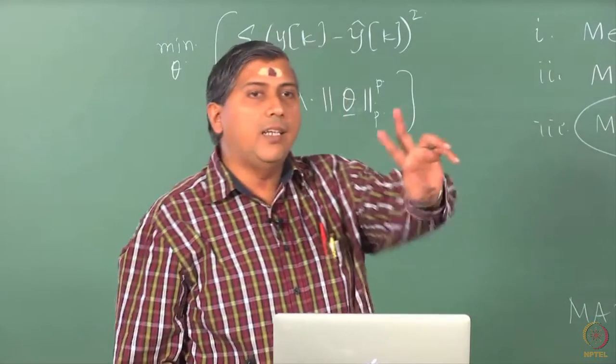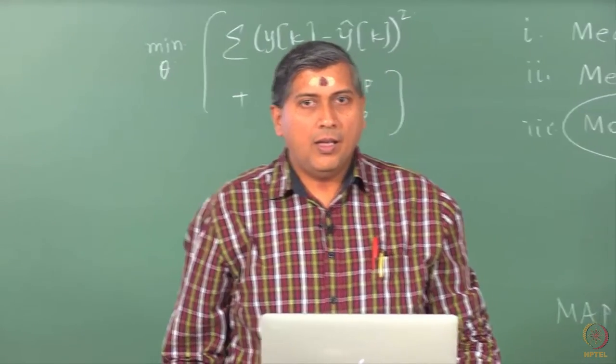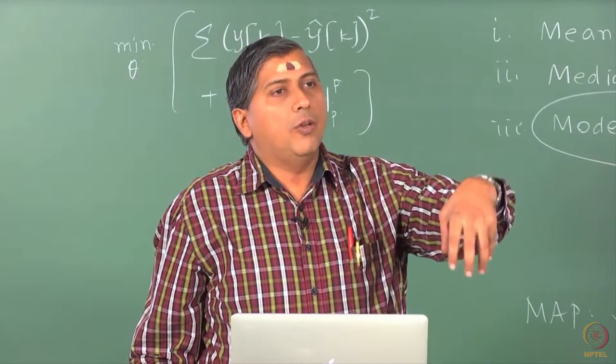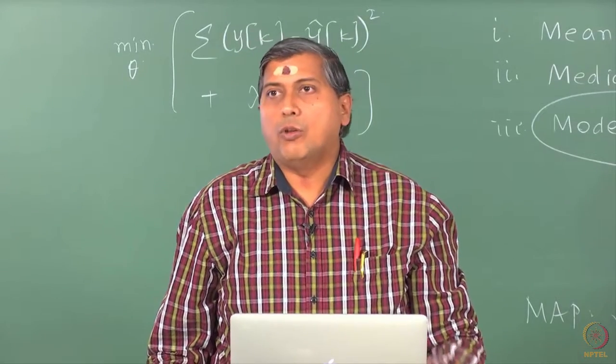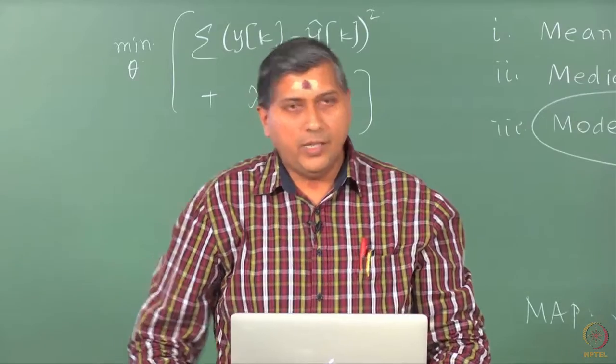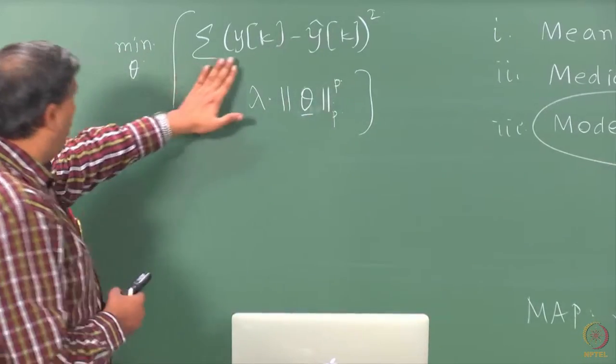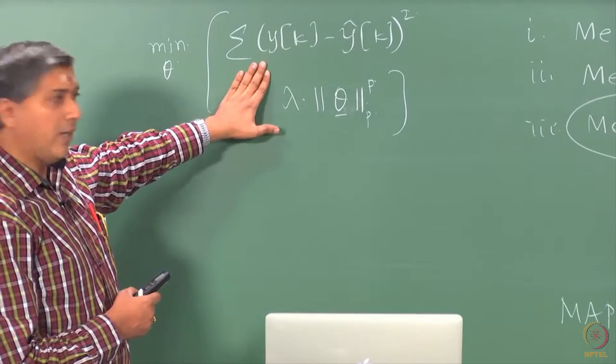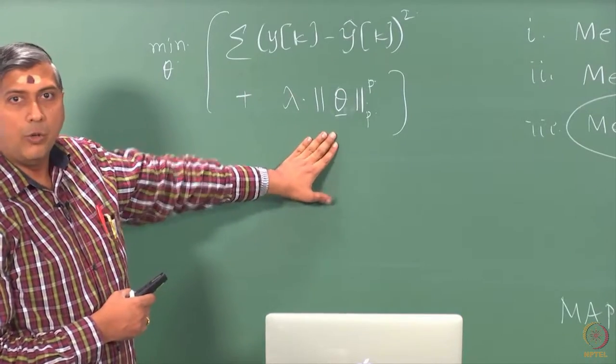Now, the goal of the optimizer is to find theta such that this is minimized. So, you can see that these two terms are conflicting. And one of the early penalty functions that was suggested was the 2 norm.